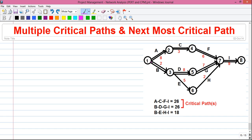And finally, our last path is B, E, H and I. So for path B, E, H, I, the total duration is 18.